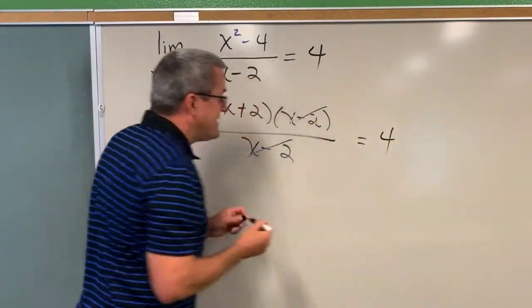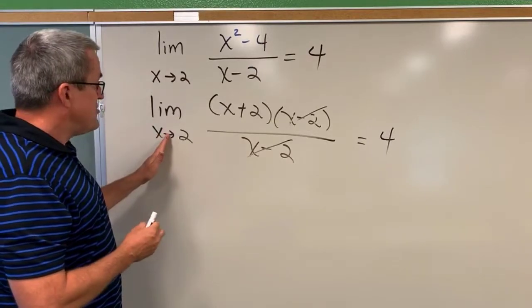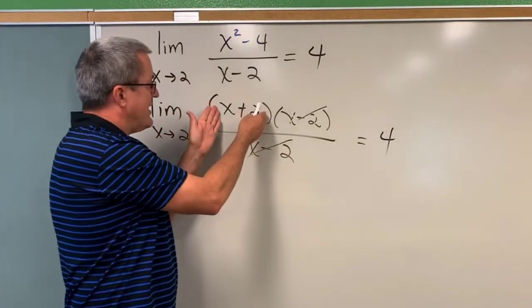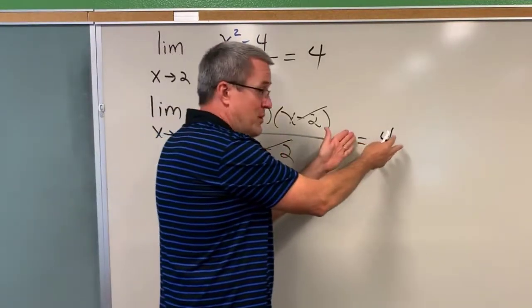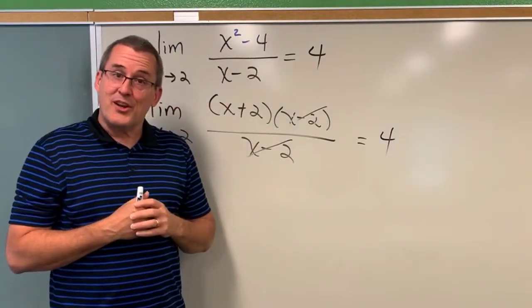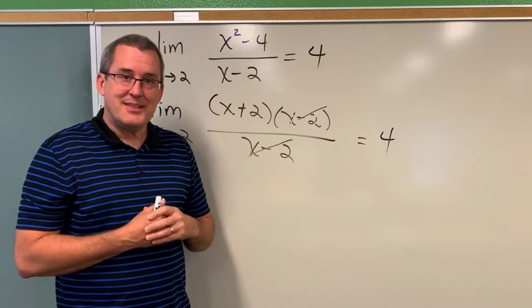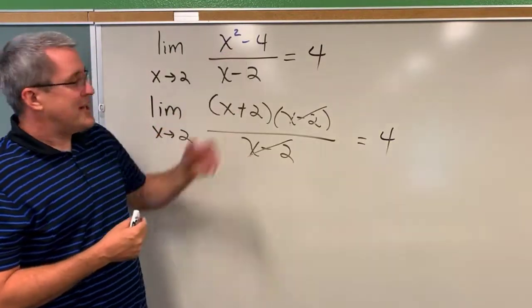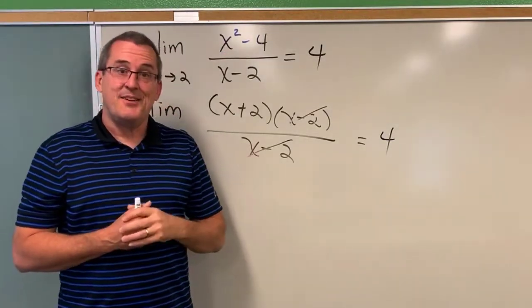And so we say, in the context of limits, as x approaches 2, the quantity x plus 2 is going to approach 4. And that confirms the work that we did earlier, that the limit as x approaches 2 for this rational function is indeed 4.